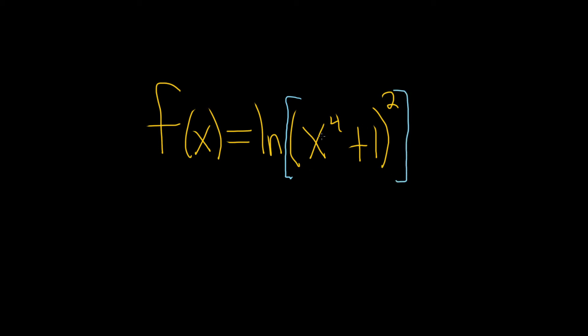The derivative of the natural log of x is just one over x. So here it's the natural log of all of this stuff. So if we just jump into it and take the derivative right away, it would be one over all of this times the derivative of all of this, and that's a bit messy.